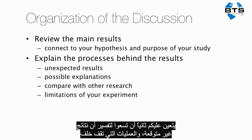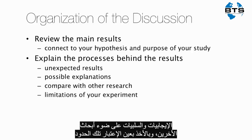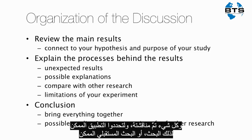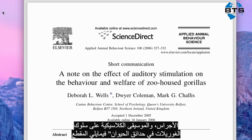In most discussion sections the authors start by reviewing the main results of the paper. Next, you should attempt to explain any unexpected results and the processes behind the patterns that you found. You should also evaluate the explanations you proposed by weighing the pros and cons in light of other people's research and considering any limitations with your experimental design. Finally, you should end your scientific paper with a conclusion that brings together everything discussed and highlights the possible applications of the study or possible future research.